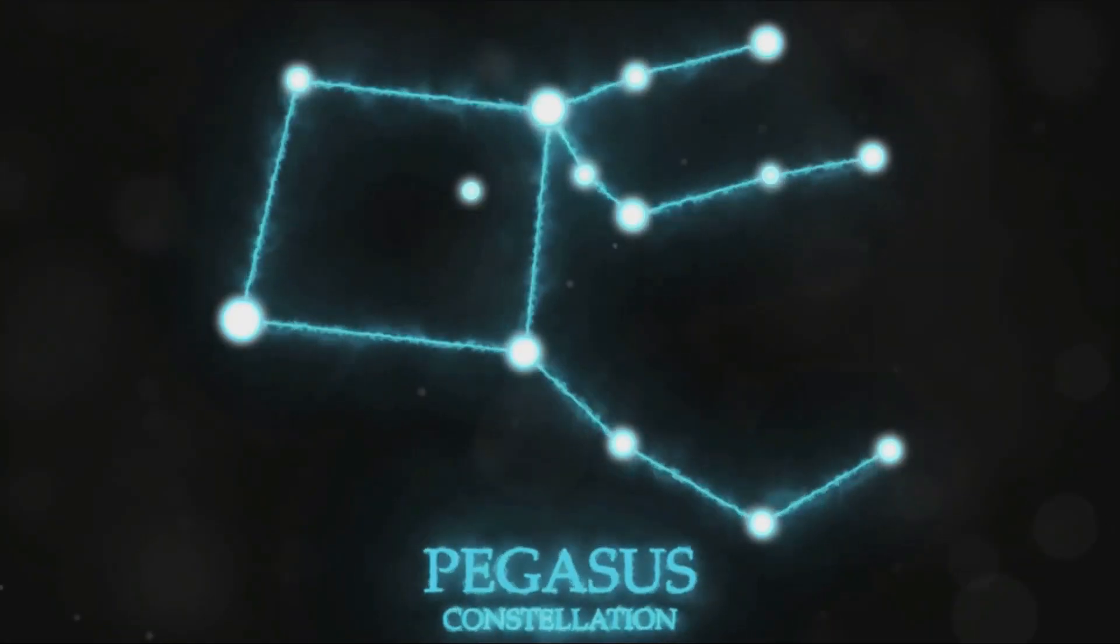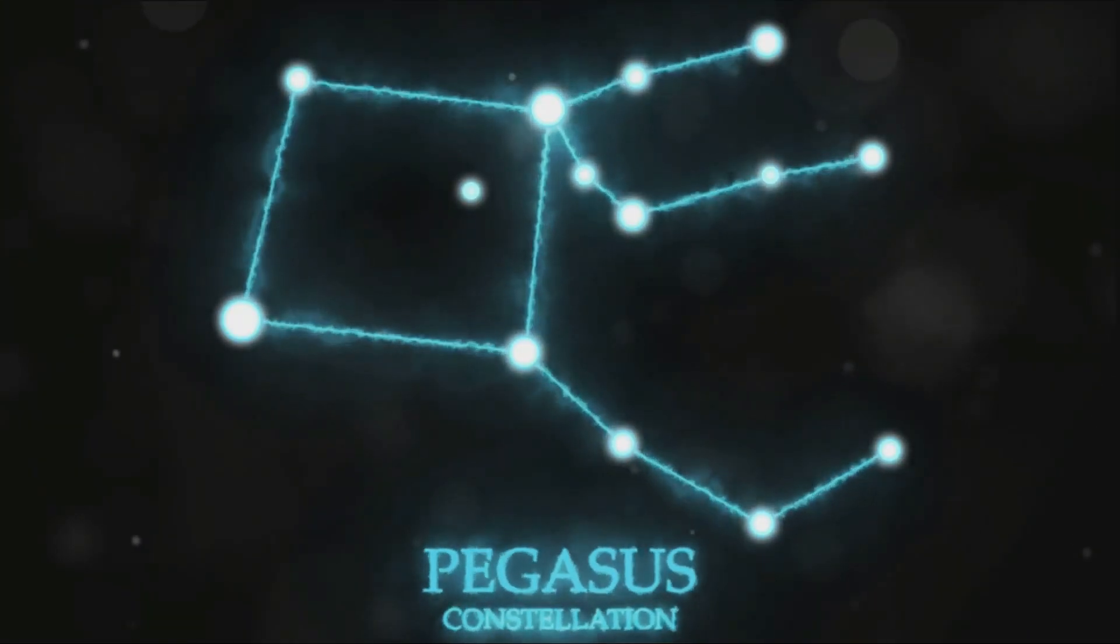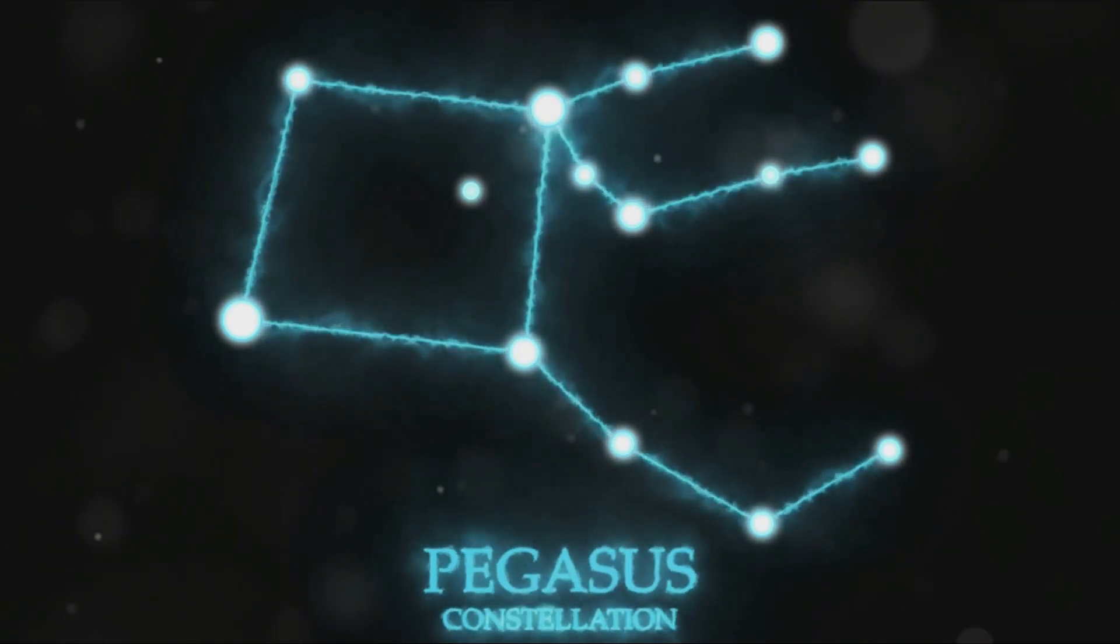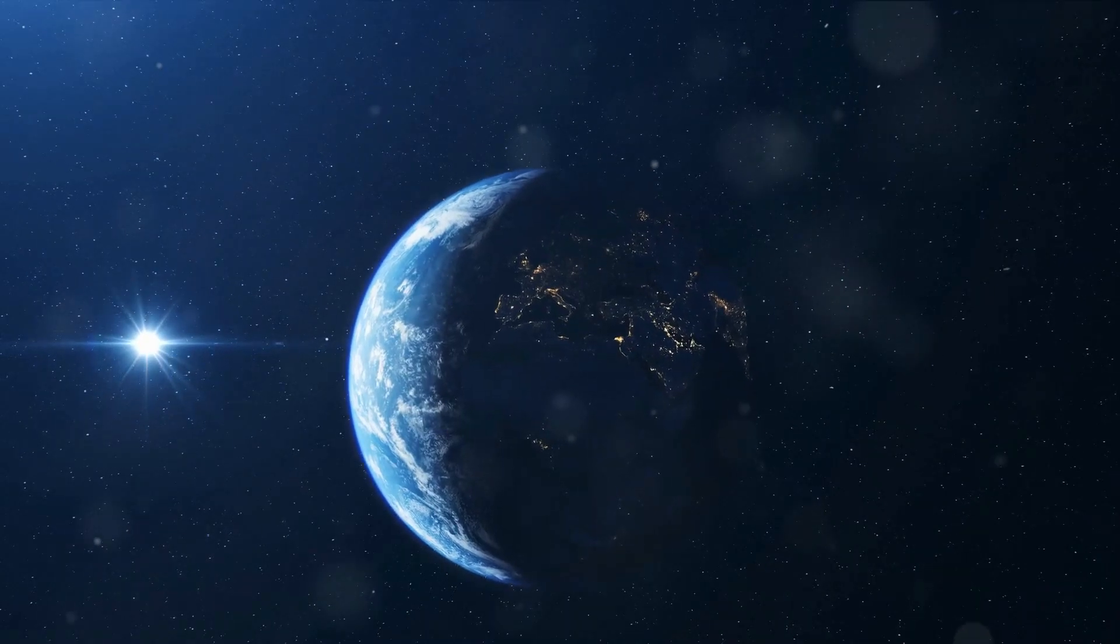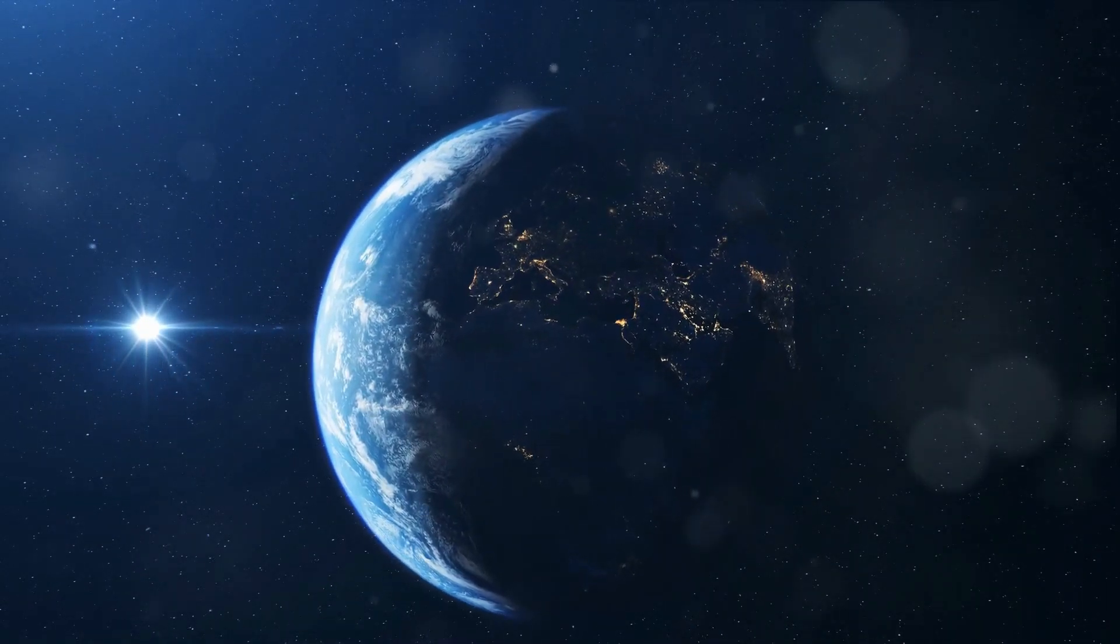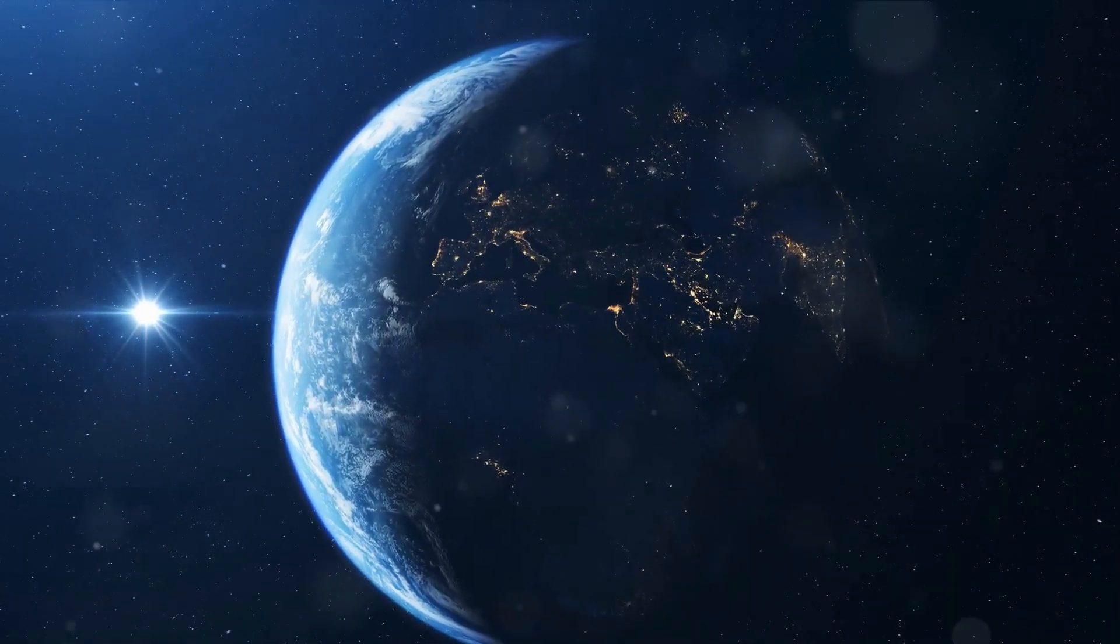Then there's Pegasus, the flying horse, which is noticeable for its large square of four stars known as the Great Square of Pegasus. Remember, constellations can appear bigger or smaller depending on their distance from Earth, and they change position throughout the year due to Earth's rotation. So, keep your eyes peeled and your imaginations ready.